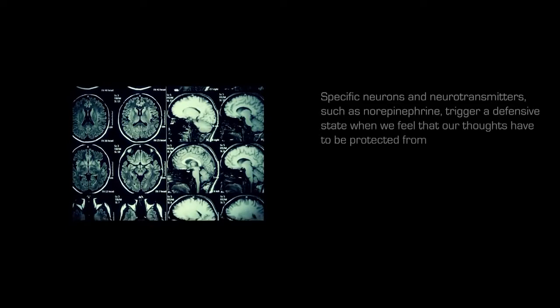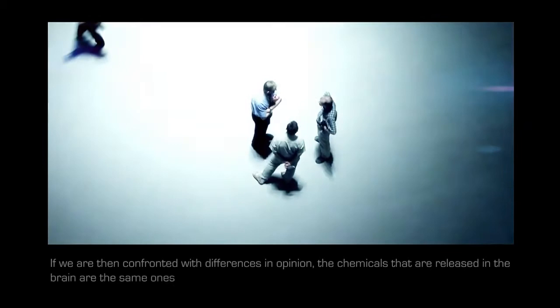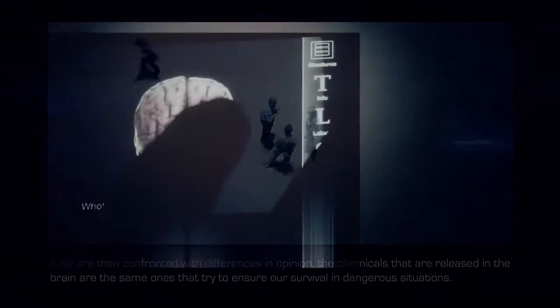Specific neurons and neurotransmitters, such as norepinephrine, trigger a defensive state when we feel that our thoughts have to be protected from the influence of others. If we are then confronted with differences in opinion, the chemicals that are released in the brain are the same ones that try to ensure our survival in dangerous situations.